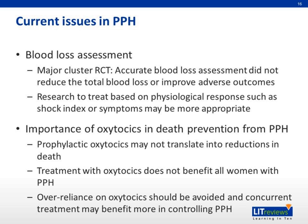Now we go on to current issues regarding PPH. First, blood loss assessment: in a major cluster randomized controlled trial, accurate blood loss assessment did not reduce total blood loss or improve adverse outcomes. More research has to be done on treating based on physiological response such as shock index or symptoms, which may be more appropriate. However, in our current local setting, accurate blood loss assessment is still integral because by the time the patient presents with physiological responses such as tachycardia and hypotension, it may be too late, and more extreme interventions may have to be enacted.